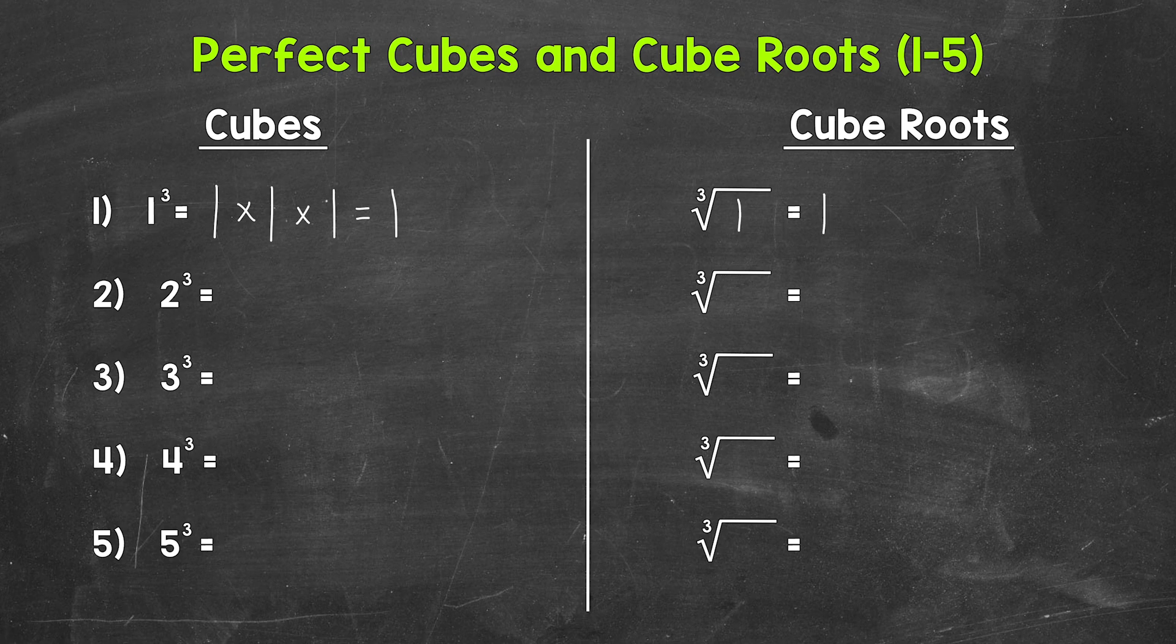Let's move on to number two where we have two cubed. That means two times two times two. Two times two is four times two is eight. Two cubed equals eight.